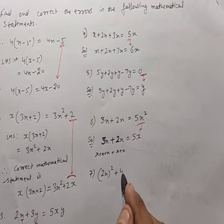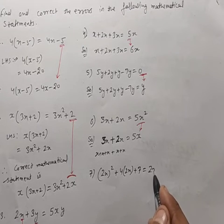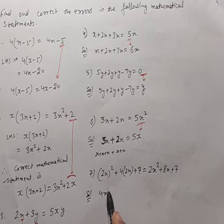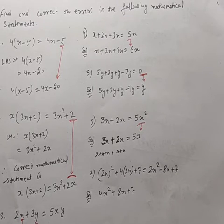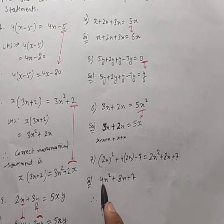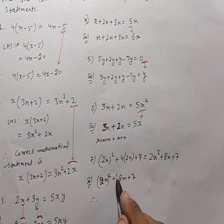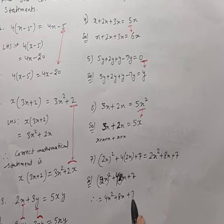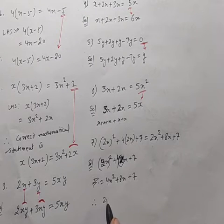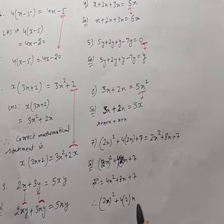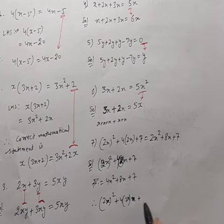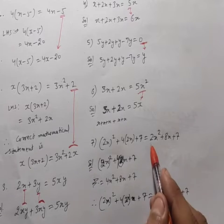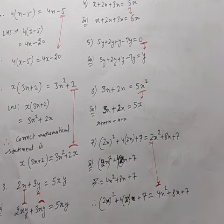Question 7: (2x)²+4(2x+7) = 2x²+8x+7 is given. Solution: (2x)² = 4x², and 4(2x+7) = 8x+28. Wait — let me redo: (2x)² = 4x², plus 4×2x = 8x, plus 7. Therefore (2x)²+4(2x+7) = 4x²+8x+7. The given answer had 2x² which was incorrect; the correct answer is 4x²+8x+7. The correction is: replace 2 with 4.